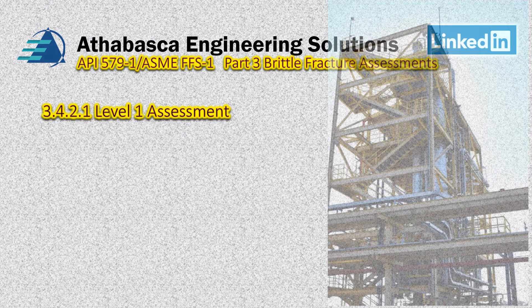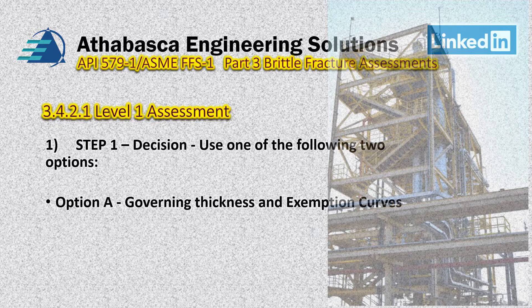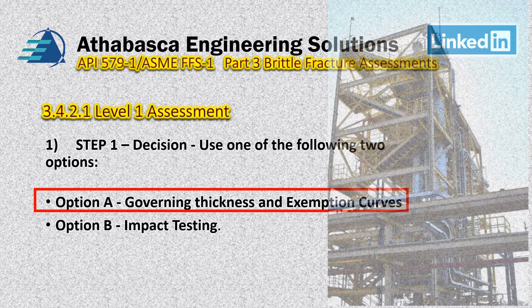We go through the procedures outlined in API 579.1 or ASME FFS-1. We start with Step 1 — making a decision about the type of analysis we're going to do. Step 2, Option A is the governing thickness and the exemption curves, and the second option involves impact testing, which we mentioned in the last few videos. In this particular case, we're going to use the governing thickness and exemption curves.